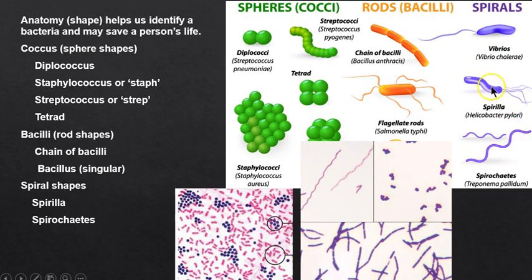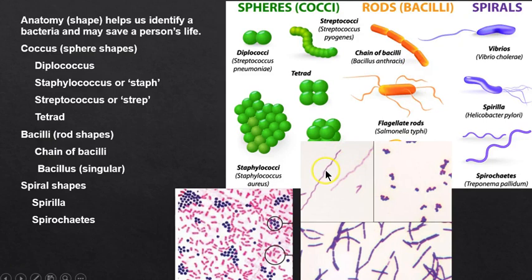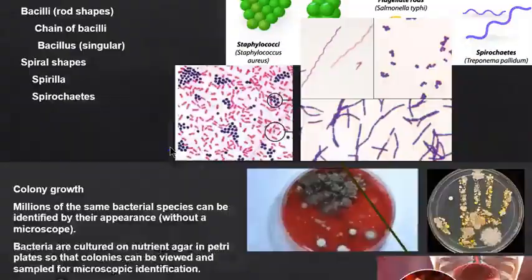You might wonder why this matters — but what if this is your throat culture and you're feeling terrible? A clump of dots means staphylococcus. A chain in a nasal swab tells us what to treat you with. If you have a spirochete, that could indicate a sexually transmitted infection. This is diplococcus; maybe a tetrad. Under the microscope, this is what those organisms look like.